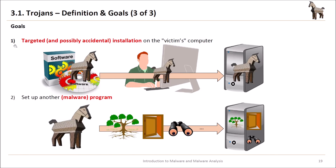What are the goals of Trojans? We have two goals. The first is the targeted and possibly accidental installation on the victim's computer. The second goal is to set up another malware program. You download software you are interested in, but it contains a Trojan horse, which installs itself and potentially other programs on your computer — including backdoors, rootkits, or spyware.